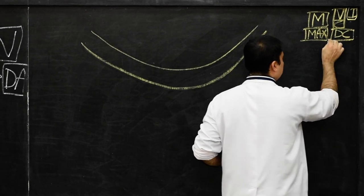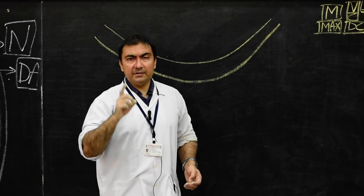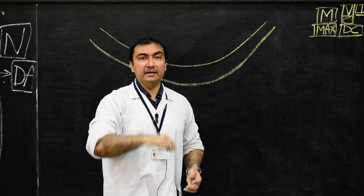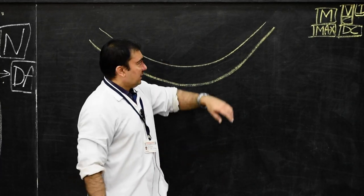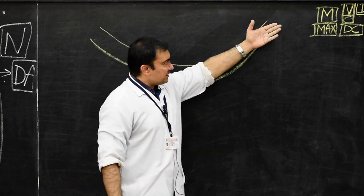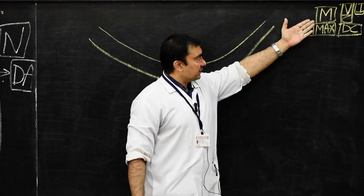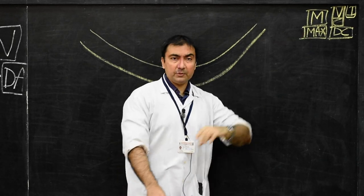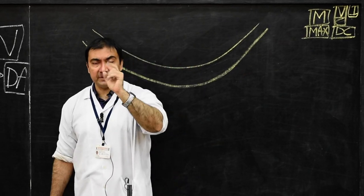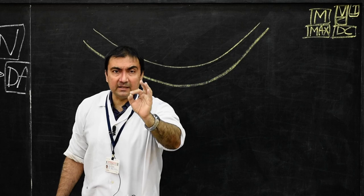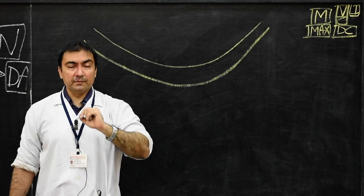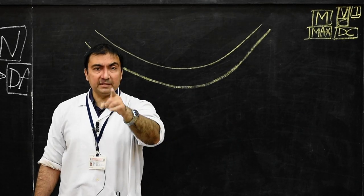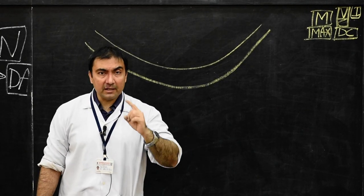We have discussed this during the development of splanchnocranium, but we need to mention it once again in detail. The cartilage of the first pharyngeal arch is called Meckel's cartilage. Meckel's cartilage is the name given to the first pharyngeal arch cartilage — you may be asked to write a short note on Meckel's cartilage.